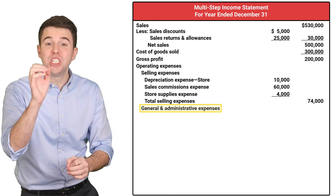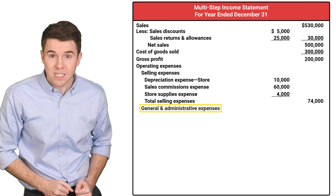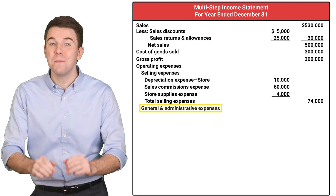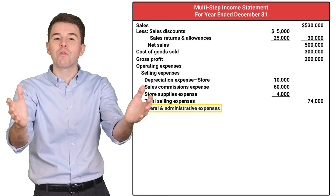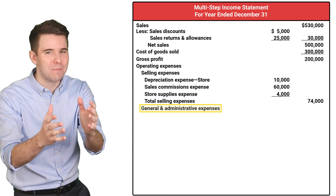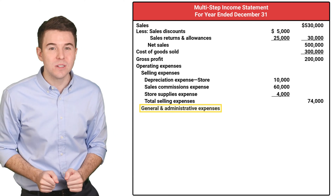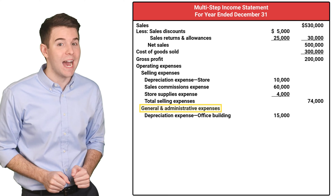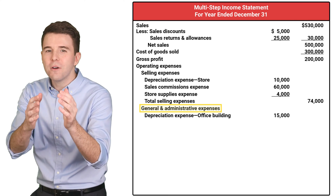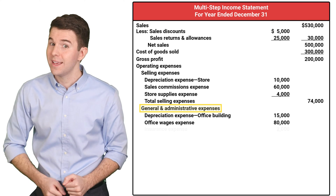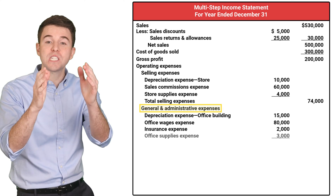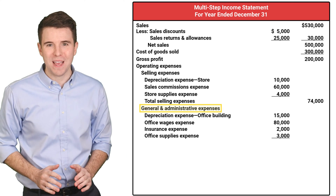Next, general and administrative expenses are expenses incurred in managing a company's overall operations. In our example, this includes depreciation expense on an office building, office wages expense, insurance expense, and office supplies expense.